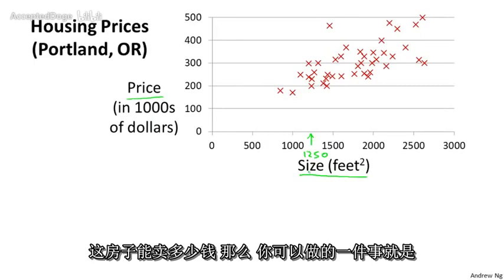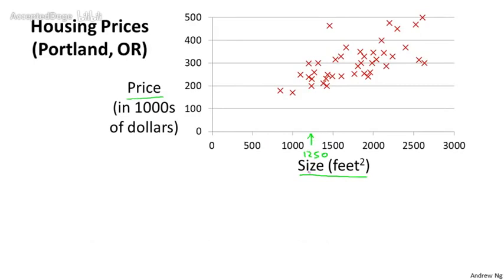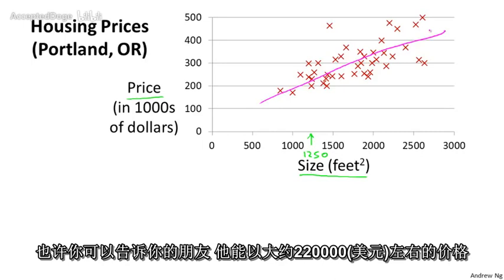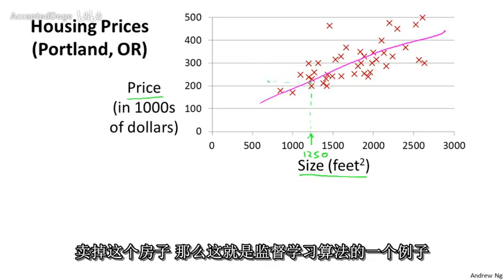Well, one thing you could do is fit a model — maybe fit a straight line to this data, like something like that. And based on that, maybe you could tell your friend that they can maybe sell the house for around $220,000.